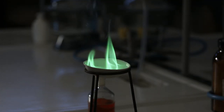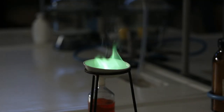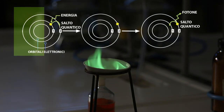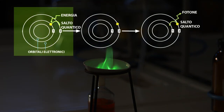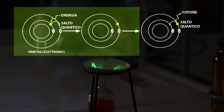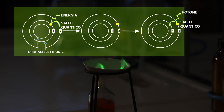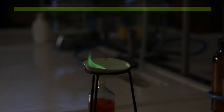La particolare colorazione verde è dovuta al fatto che gli elettroni dello ione borato presente nella miscela, con la combustione, acquistano energia in eccesso, per cui si spostano su livelli energetici superiori e nel ritornare nel loro livello rilasciano energia luminosa corrispondente alla radiazione verde.